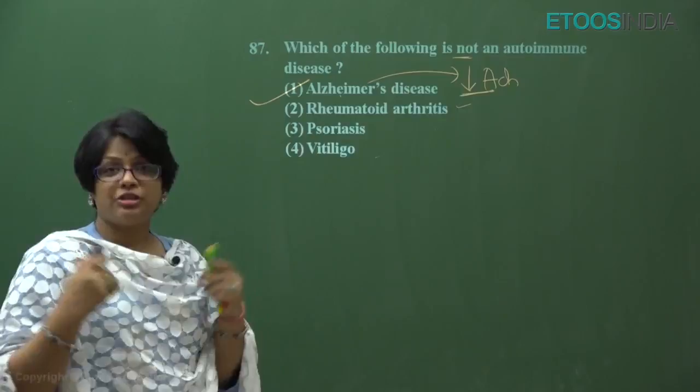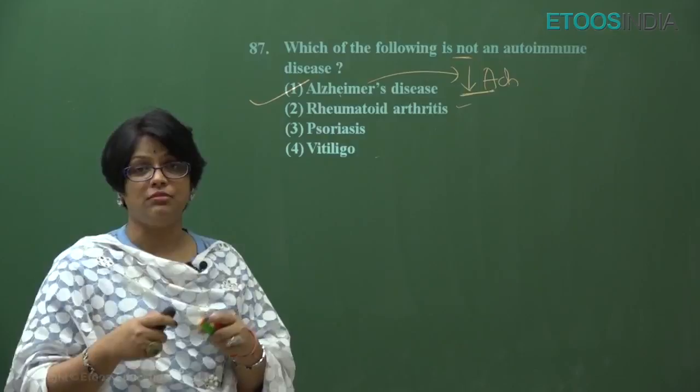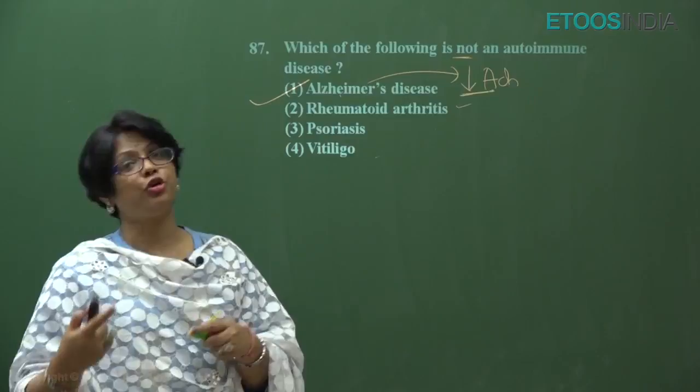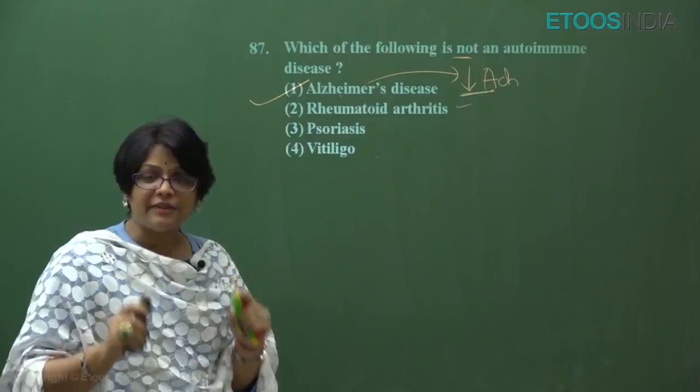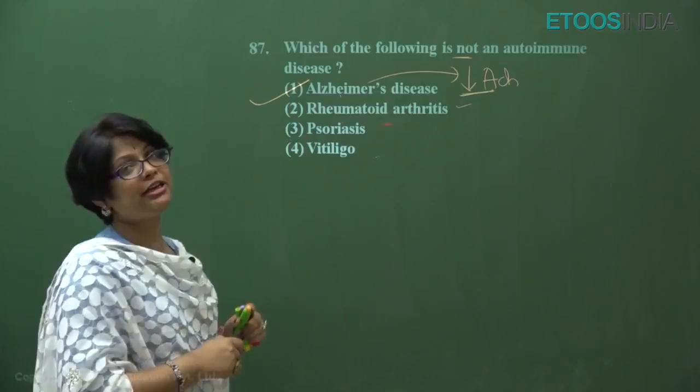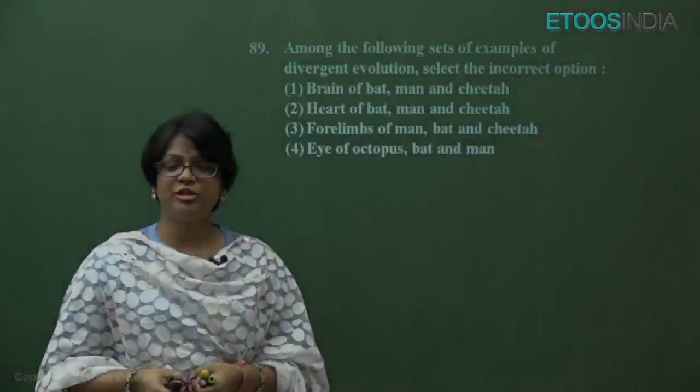If we look into the details, research is indicating that some cases of Alzheimer's could also involve autoimmunity. So now all of these conditions are considered to have a role of autoimmunity in their causation. But at the NEET level, the best answer is Alzheimer's, because the other three are definitely autoimmune disorders. The best answer is option one.